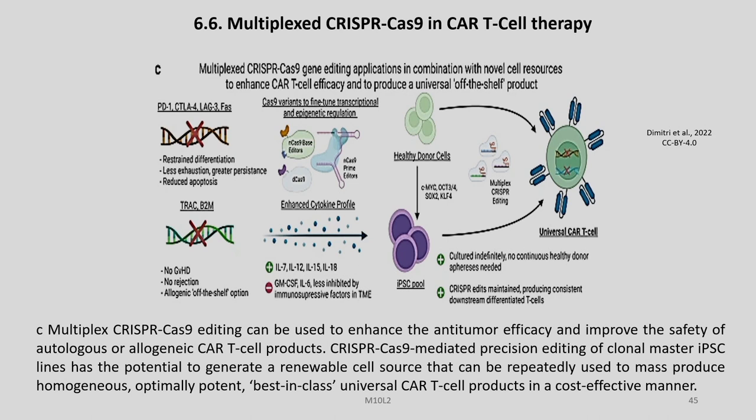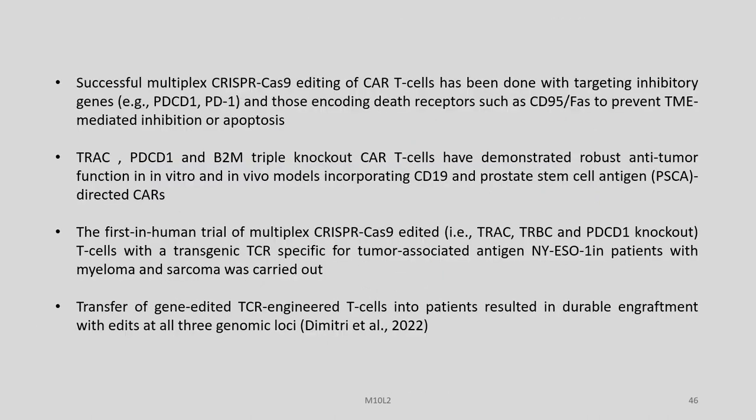Multiplexed CRISPR-Cas9 in CAR T-cell therapy: Multiplexed CRISPR-Cas9 editing can be used to enhance the anti-tumor efficacy and improve the safety of autologous or allogeneic CAR T-cell products. CRISPR-Cas9-mediated precision editing of clonal master iPSCs has the potential to generate a renewable cell source that can be repeatedly used to mass-produce homogenous, optimally potent, best-in-class universal CAR T-cell products in a cost-effective manner.